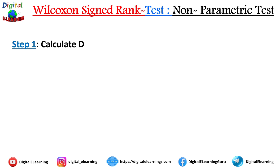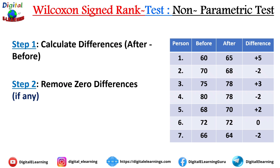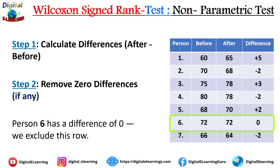Step 1: calculate the difference between before and after for each of the seven persons. You will see differences that are positive, negative, and zero. Step 2: remove zero differences. In this case, one person has the same reading before and after, so we exclude that row. That leaves us with six persons and six readings.